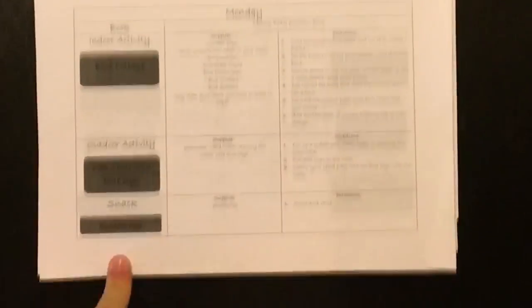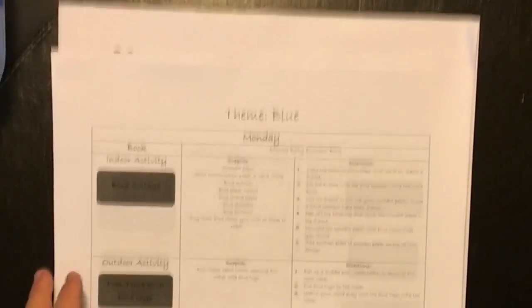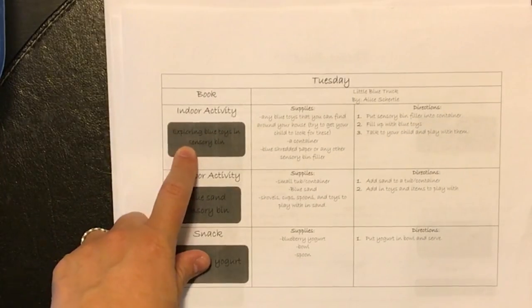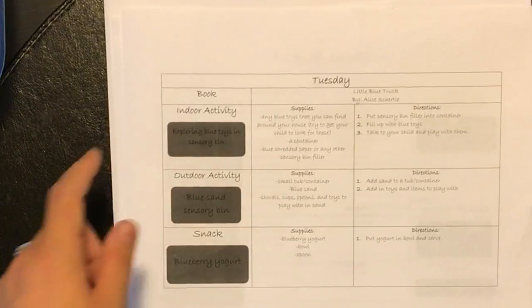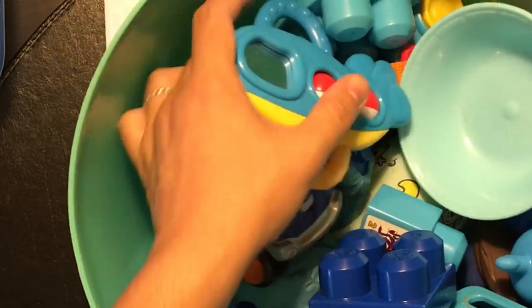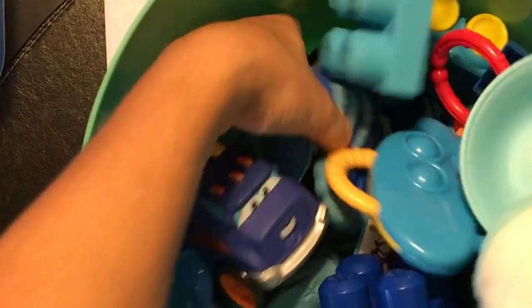And then our snack is blueberries that day. So for Tuesday, it says exploring blue toys in a sensory bin. It's not really in a sensory bin. It's going to be playing with all the blue toys in this bin. And I'll play with him, and I'll talk to him about the toys.